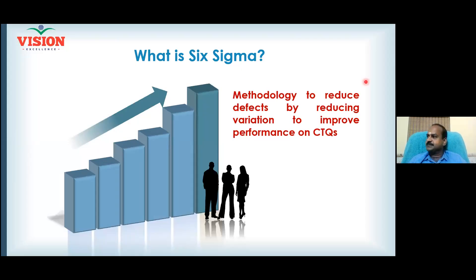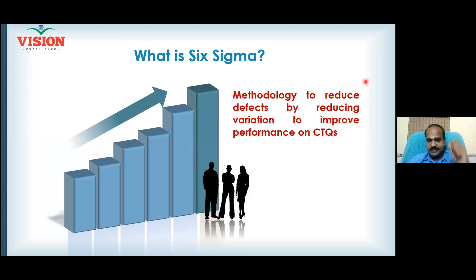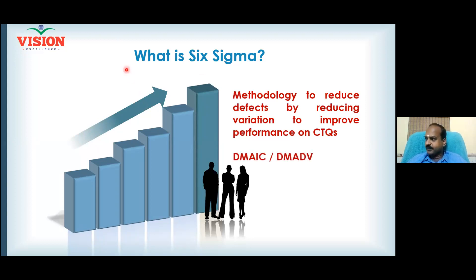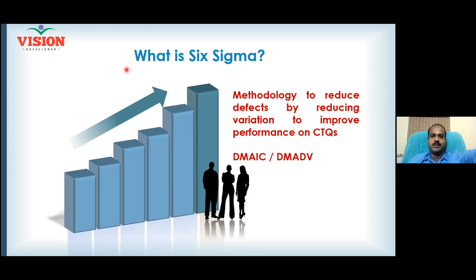Six Sigma is a methodology to reduce defects by reducing the variation so that a product's performance on a particular feature — we call it CTQ, critical to quality — really improves. Six Sigma gives two methodologies: DMAIC and DMADV. However, our focus is now limited only to DMAIC, where we want to improve the quality of an existing product.